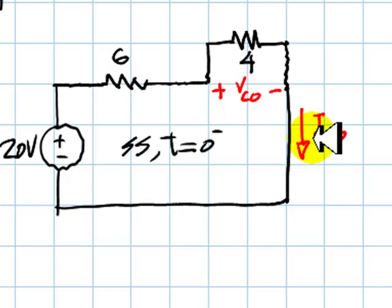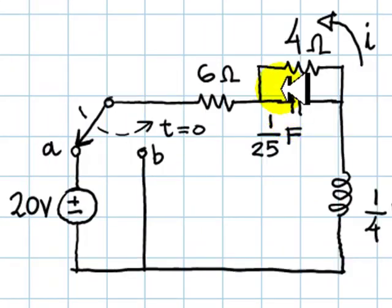Just a comment. When you assume that the voltage in the capacitor is like this, you are assuming at the same time that the positive direction for the current in the inductor is like that.